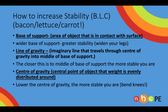Base of support is basically how much of the area that you have is in contact with the ground or whatever surface you're on — the surfboard, the skis, whatever it might be. It's always the case that the wider that base of support, the greater the stability. Your line of gravity is a slightly more difficult concept — just imagine a line from right up in the sky that travels through your centre of gravity and hits smack bang in the middle of your base of support. The closer this line of gravity is to the middle of your base of support, the more stable you'll be. Finally, your centre of gravity is the central point of an object around which weight is evenly distributed — basically what you rotate around. The lower you can get your centre of gravity, the more stable you're going to be.